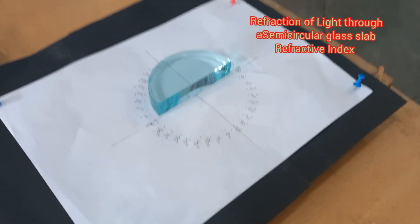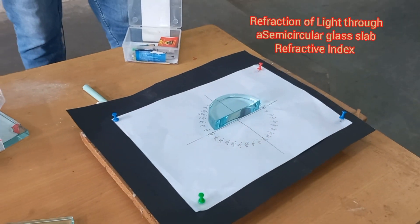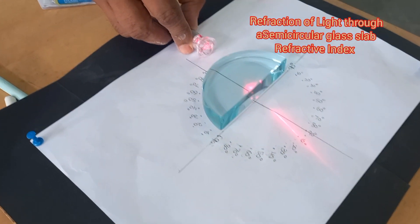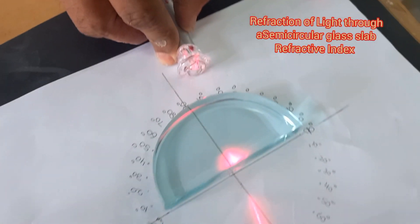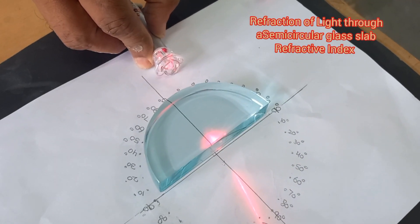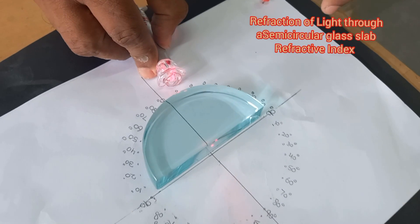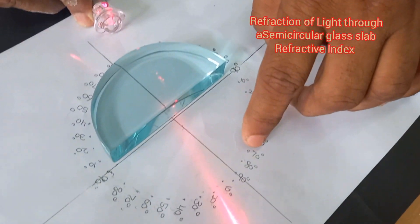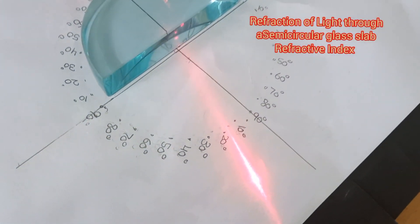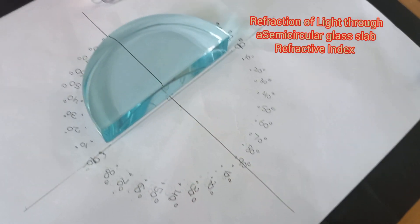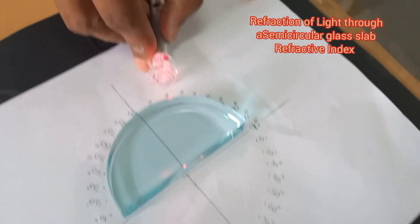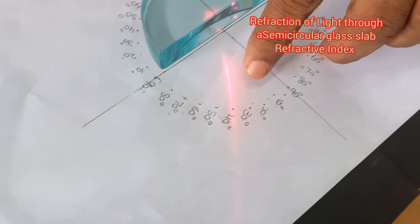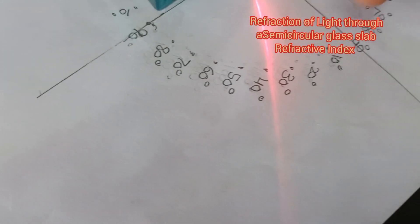Now observe — this is very important. I am now focusing the laser making an angle of 10 degrees. When the angle of incidence is 10 degrees, observe. Next, light is incident on the glass slab making an angle of 20 degrees. At 20 degrees, the angle of refraction is 35 degrees.